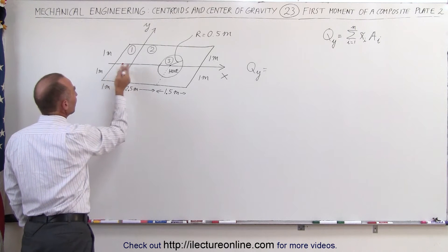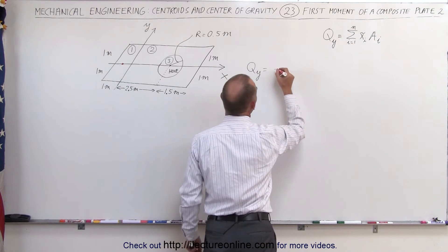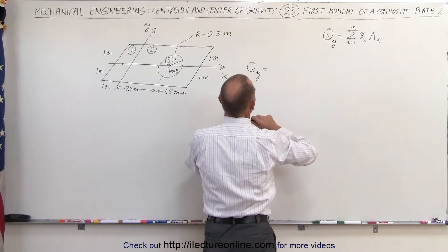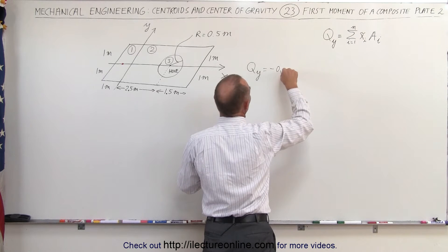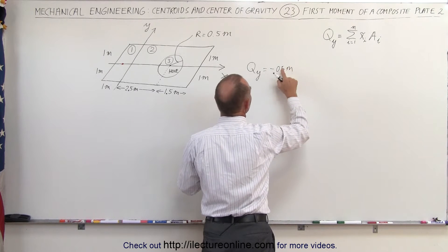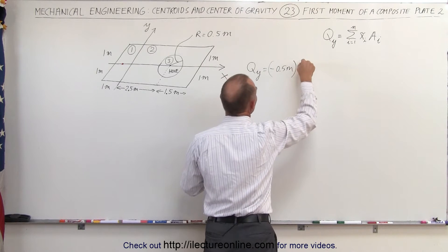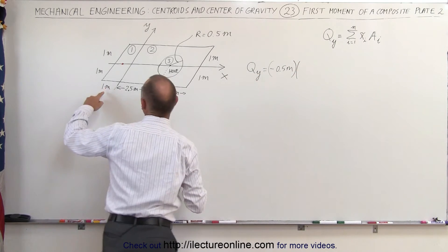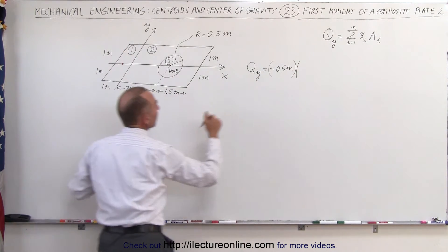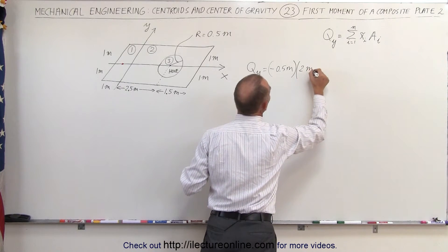That would be minus 0.5 meters to the left of the y-axis, minus 0.5 meters times the area which would be one meter times two meters which is two meters squared.